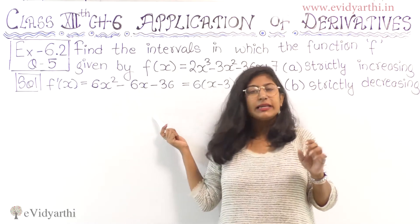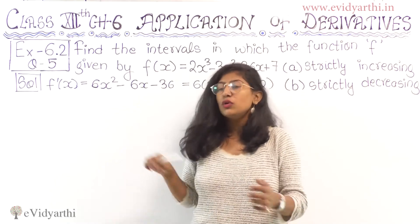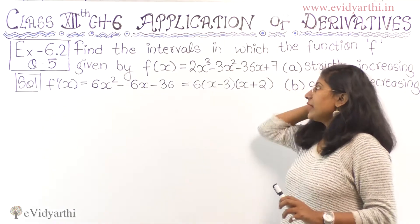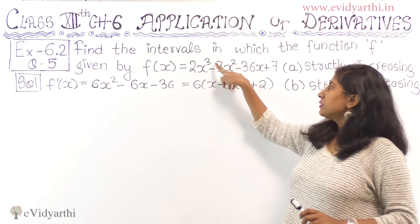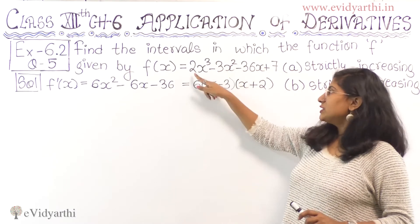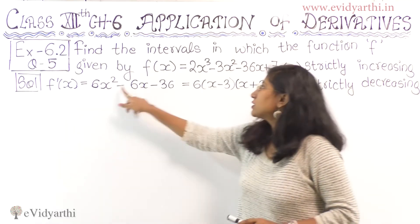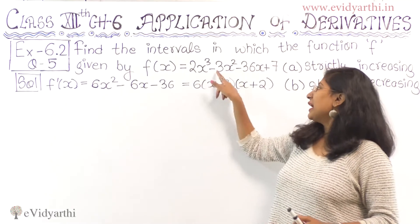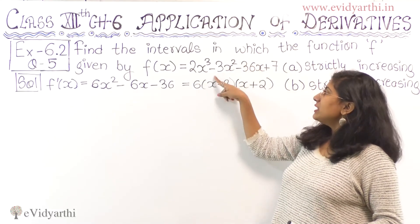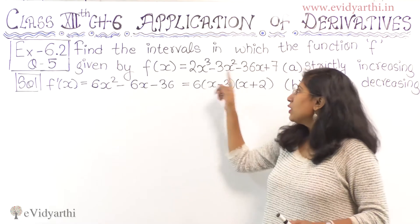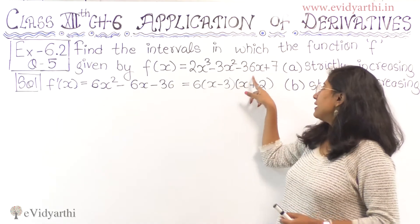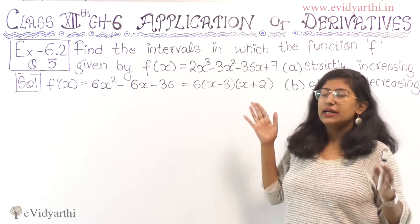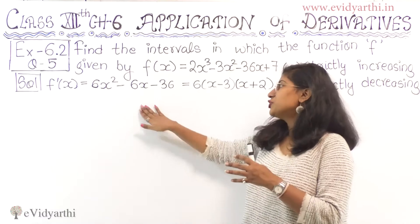So we have to find the derivative first. This is the first step. Let's write f'(x). The derivative of 2x³ is 6x², derivative of -3x² is -6x, and derivative of -36x is -36. So f'(x) = 6x² - 6x - 36. This is our derivative.